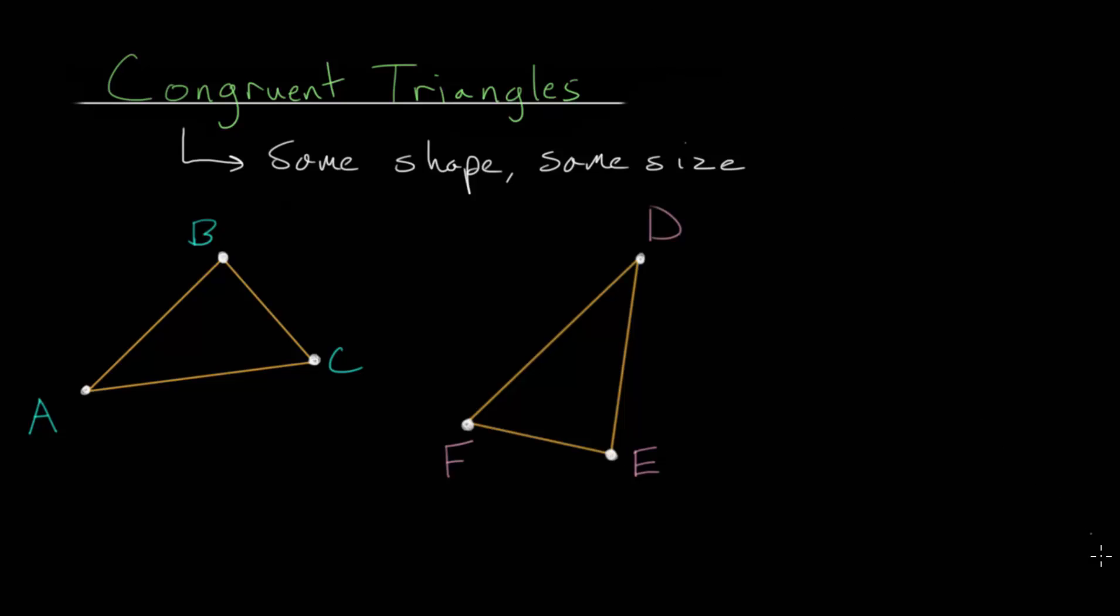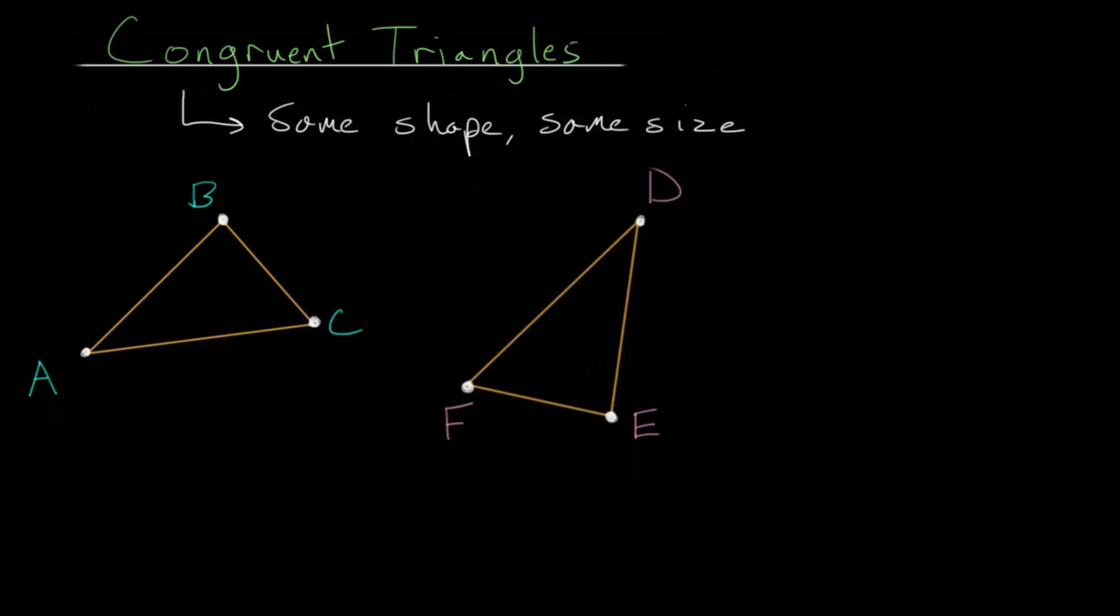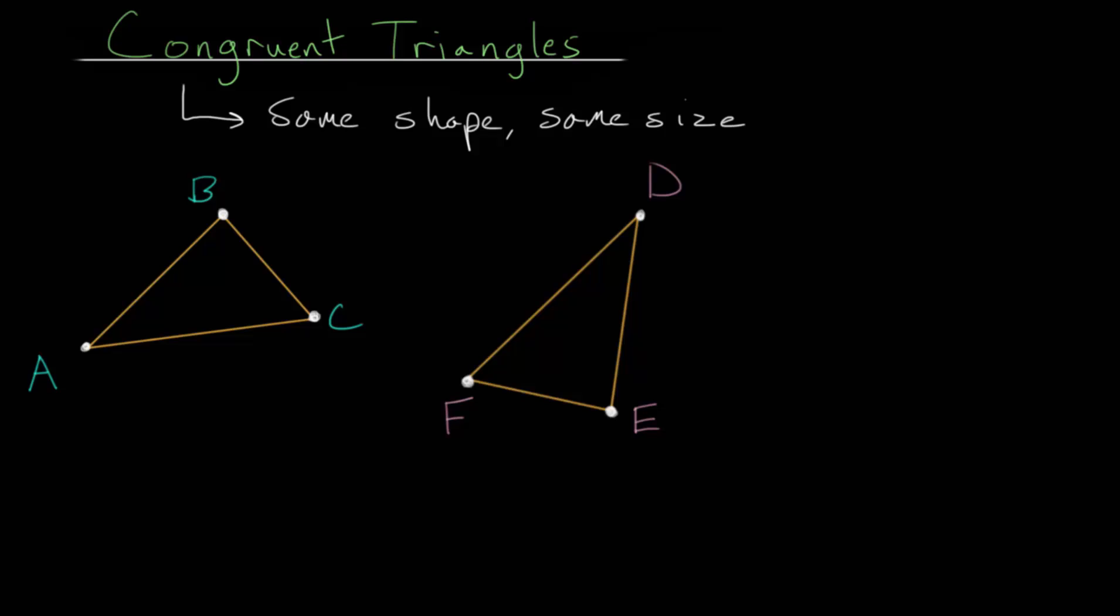And for these congruent triangles, let me just make a little bit of room. We have some notation to say that they are congruent to each other. We could say that triangle ABC is congruent, and we'll use an equal sign with a wavy line on top, to triangle DEF.